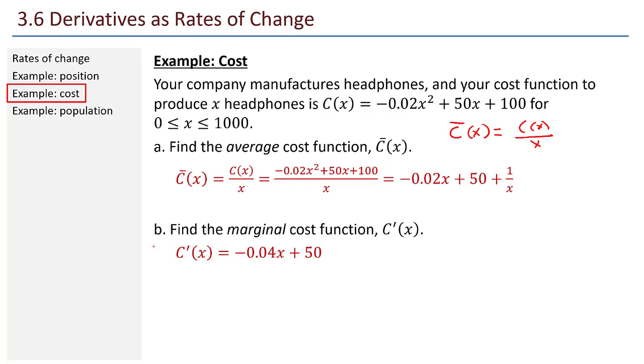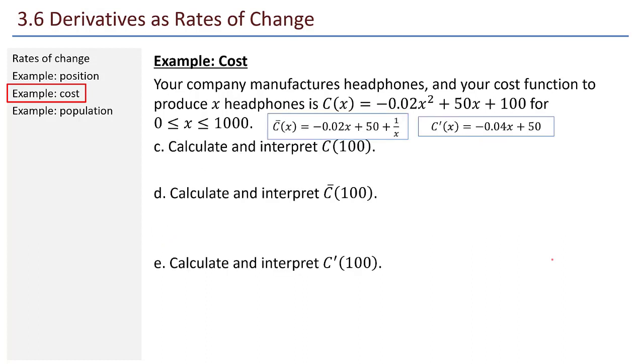And now we interpret these results. Okay. How do I calculate and interpret C(100)? So if I plug in 100 into my original cost function, I get $4,900. This is the total cost to produce 100 headphones.